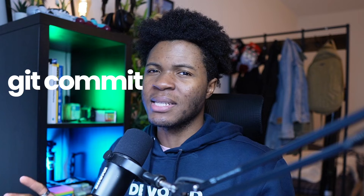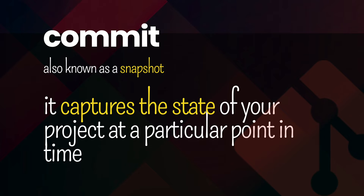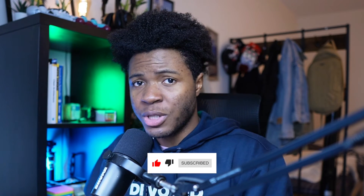The first thing to understand is: what is a commit? You can think of a commit as a snapshot — it captures the state of your project at a particular point in time. Think of commits as different versions of your project. You can always go back to see what those versions are and the changes that were introduced in them.